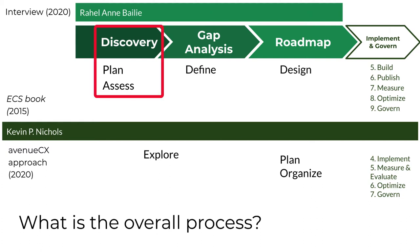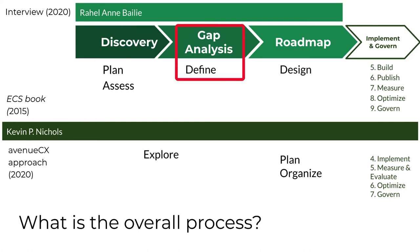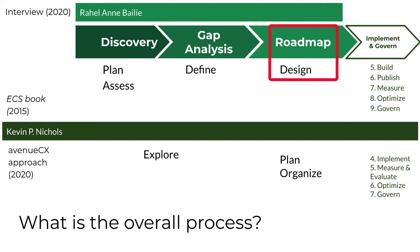You've gone through the discovery or plan and assess phase of a project by completing a content inventory and assessment. You've also gone through the gap analysis or define phase of a project by summarizing your findings in a content assessment or audit report. At this point in the process, your task is to design the best path forward to close the gap between the present state and the desired future state by creating a strategic roadmap. This lecture has been designed precisely to help you do that.